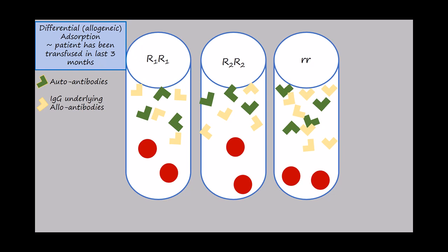So if that's the case, these red cells are phenotypically typed. They're usually R1R1, R2R2, and rr. Your patient's serum is incubated with these specific allogeneic phenotypically typed red cells, and you can see that the autoantibodies are attaching.